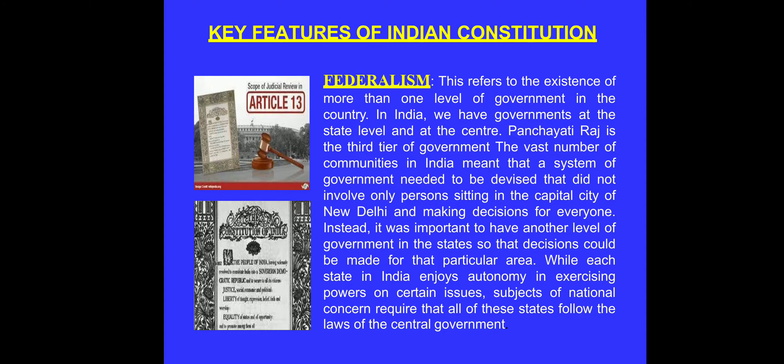After federalism, I was telling you about the parliamentary form of government. In the parliamentary form of government, the different tiers — central government, state government, and local government — consist of representatives who are elected by the people of the country. It also guarantees universal adult franchise, meaning persons who are 18 years and above have the right to vote.